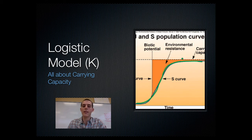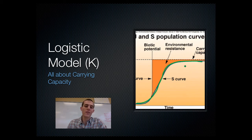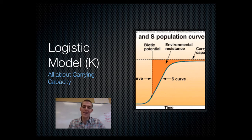Essentially an equilibrium is reached where the population hits up against the carrying capacity and says we're out of resources, so we can't grow any bigger than this. Recognize this as a logistic curve and know that it's based on carrying capacity, which is represented as K.